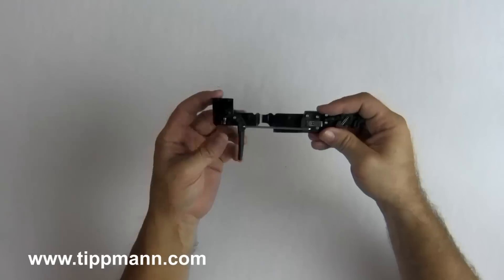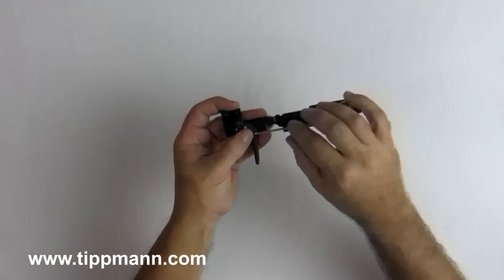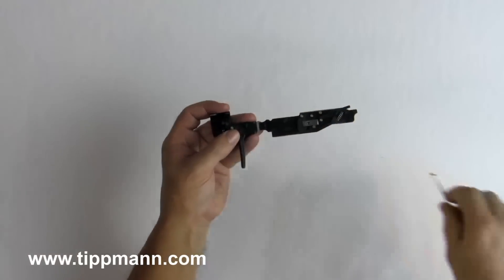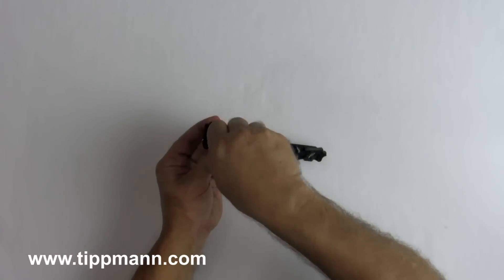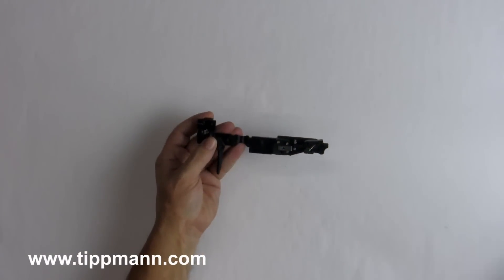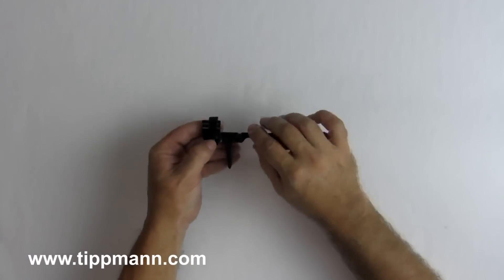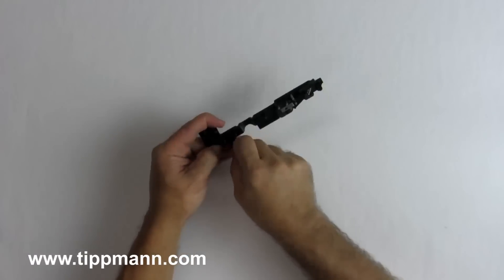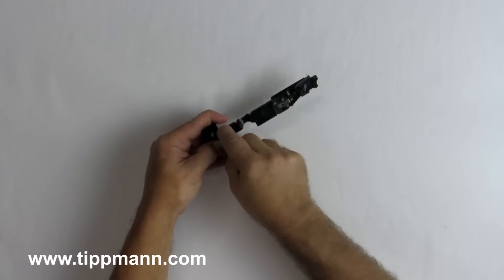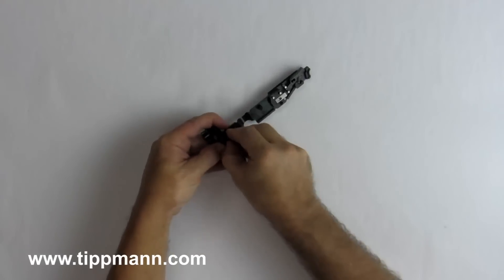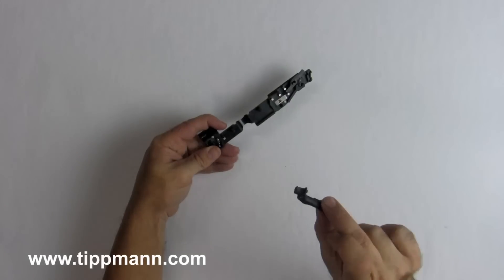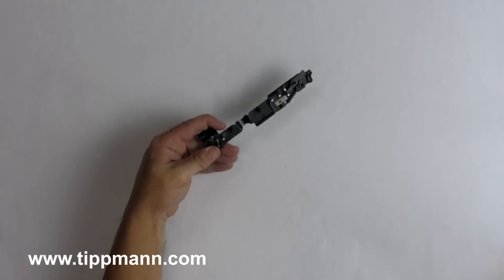So this is the trigger and this is what we're going to change. Go ahead and take the trigger linkage off, pull the safety, and watch out for the trigger spring. It can shoot out, so carefully take the trigger out. That's the trigger. We'll set that aside.